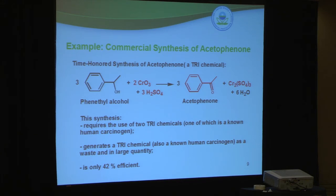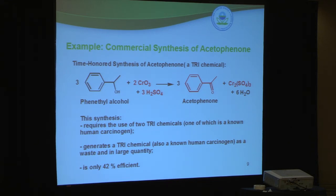When all is said and done, this transformation or manufacturing method is only 42% efficient because of all that chromium sulfate waste that is created. For many years, this is how chemistry has been done in industry, with very little regard for the environmental impact or safety of the chemicals used. This is terrible chemistry — it's bad chemistry. It is because of this type of chemistry that we have environmental authorities such as the U.S. EPA and others.